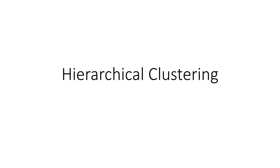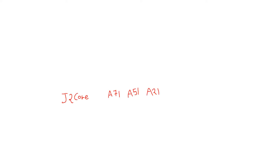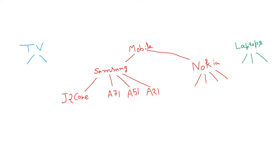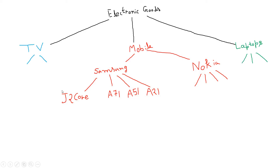Welcome to Knowledge Amplifier. In this video we are going to discuss how we can form clusters from a dendrogram in hierarchical clustering. In my previous video I discussed one simple use case of hierarchical clustering, clustering electronic goods. For example, J2, A71, Galaxy A51, Galaxy A21 — different Samsung products — are clustered into one group named Samsung. But this is not exactly what happens in a dendrogram, because a dendrogram is a binary cluster where one parent cannot have more than two children.